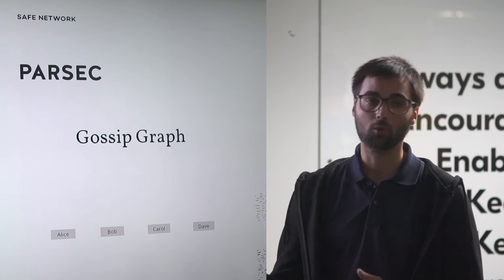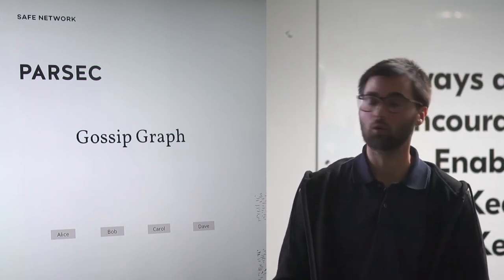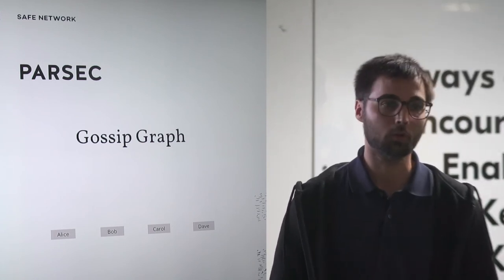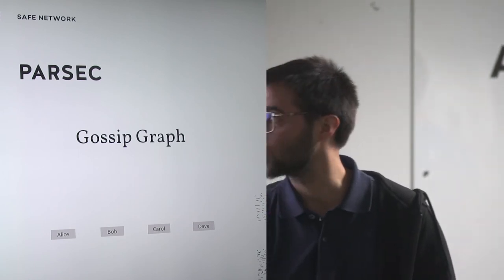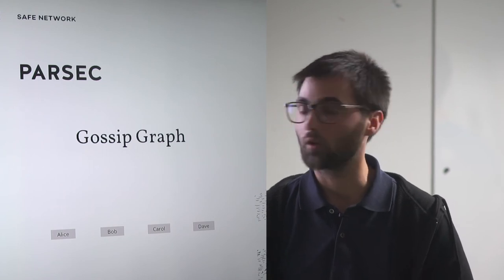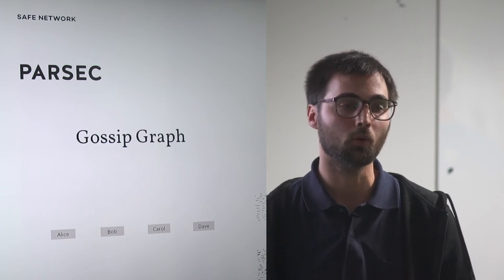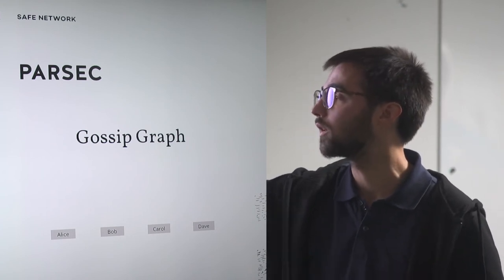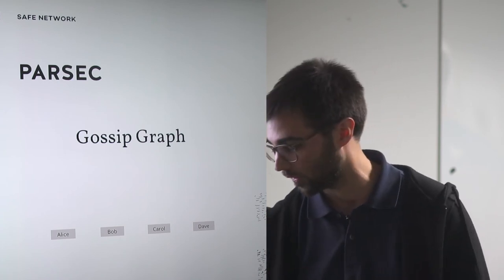The gossip graph is the data structure you construct — it's just a collection of gossip events. Here we give names to four computers: Alice, Bob, Carol, and Dave, because it's easy to refer to them that way. We'll see what would happen if they were communicating. This is not a network starting from scratch — you can assume some communications happened before. We're taking an ongoing communication in the network and observing what happens.